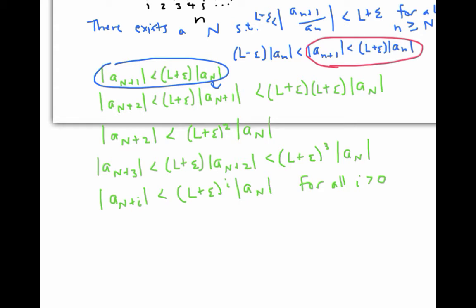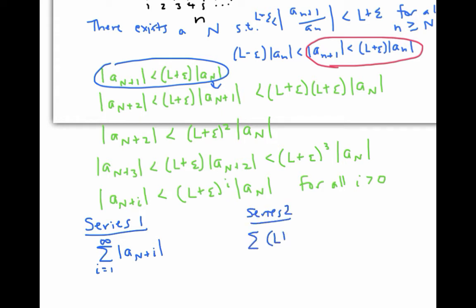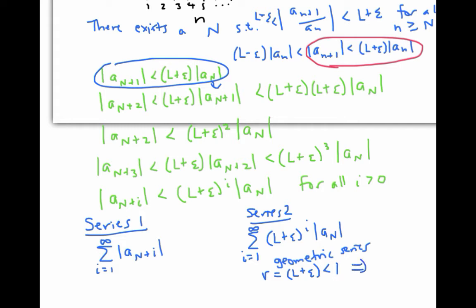With all these inequalities, I'm gradually building up two series. The first series is the sum of the absolute value of a sub (capital N plus i), from i equals one to infinity. The second series is the sum of (L plus epsilon) to the i times the absolute value of a sub capital N, from i equals one to infinity. Now the second series is a geometric series where r equals L plus epsilon, which is less than one — because we chose epsilon to make sure of that. Therefore, the geometric series converges.